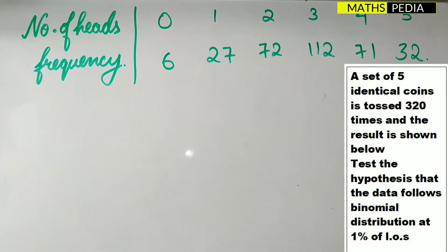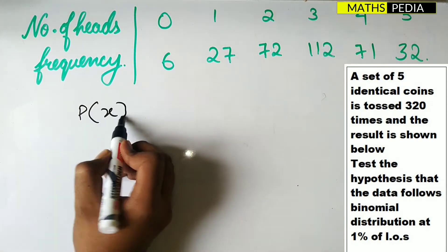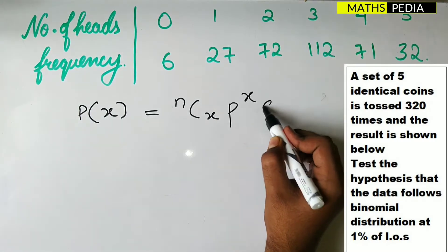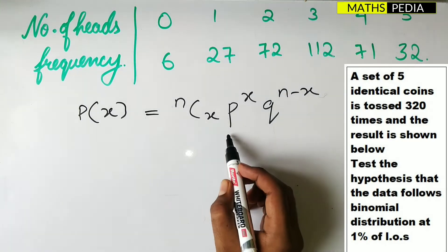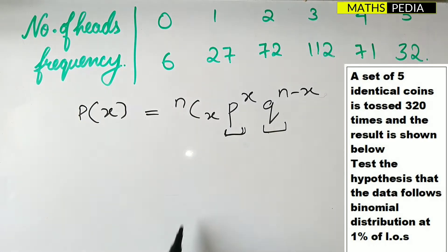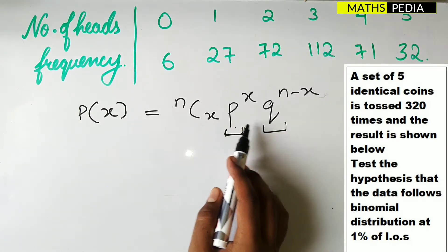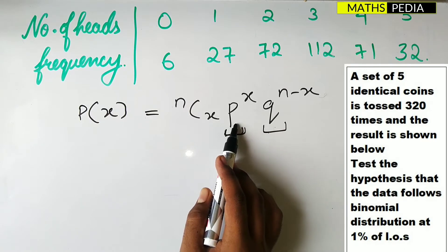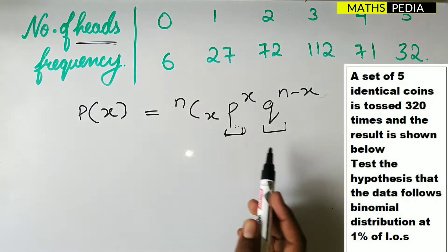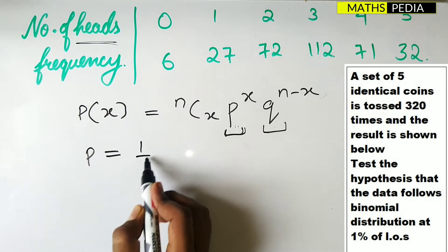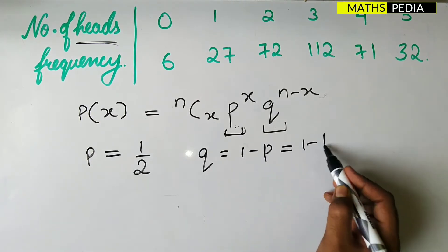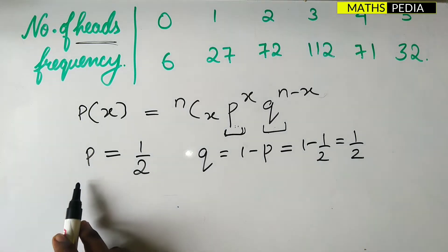The experiment is based on binomial distribution. The formula is P(x) = nCx * p^x * q^(n-x). Here we need to find p and q, where p is the probability of success and q is the probability of failure. The probability of getting heads when a coin is tossed is 1/2, so p = 1/2. Then q = 1 - p = 1 - 1/2 = 1/2.